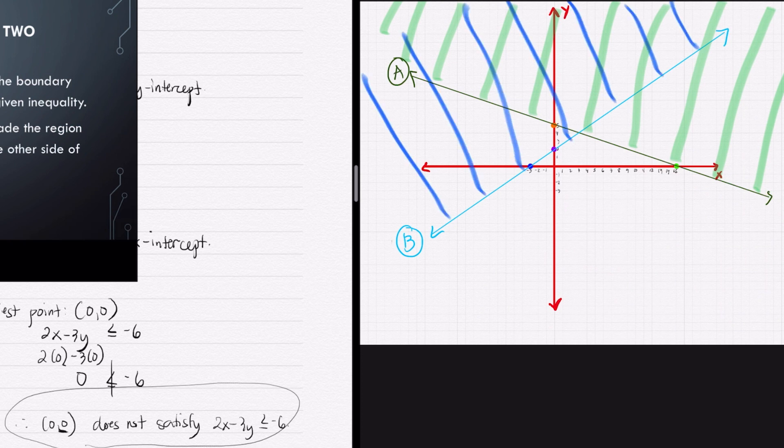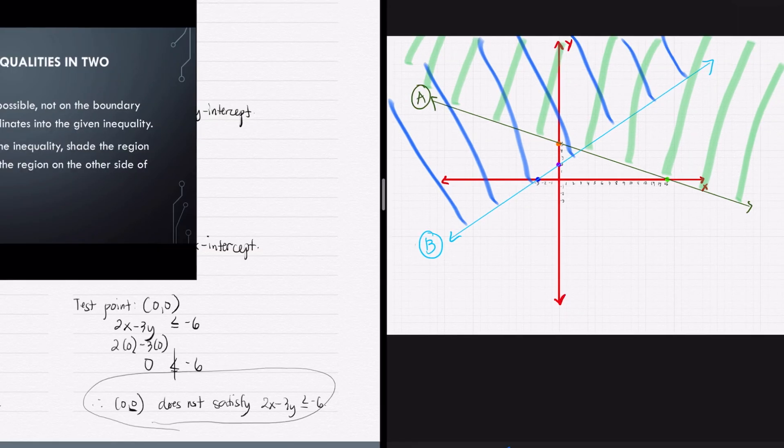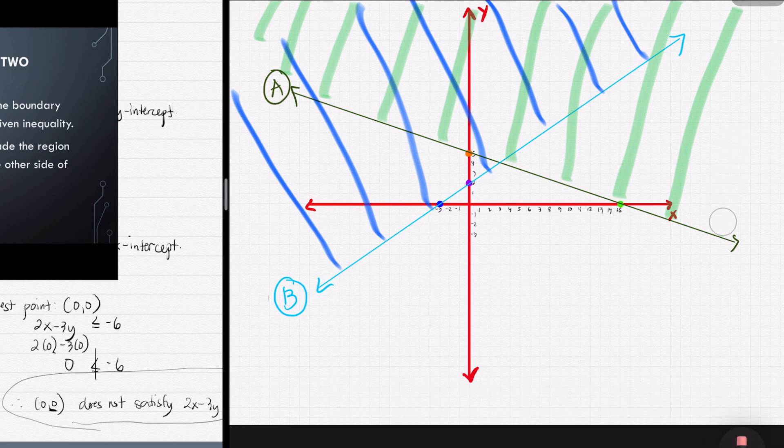With these shaded regions, when we say feasible region, feasible region should be the region wherein we have both shades of inequality. Thus, the feasible region for these two inequalities will be the region wherein we have both blue and green shades. So we may now erase this region that does not satisfy both of the inequalities.